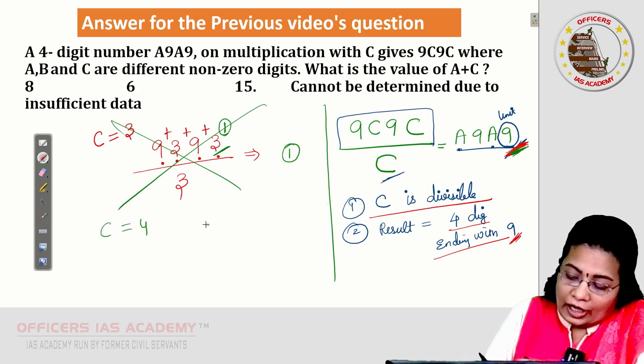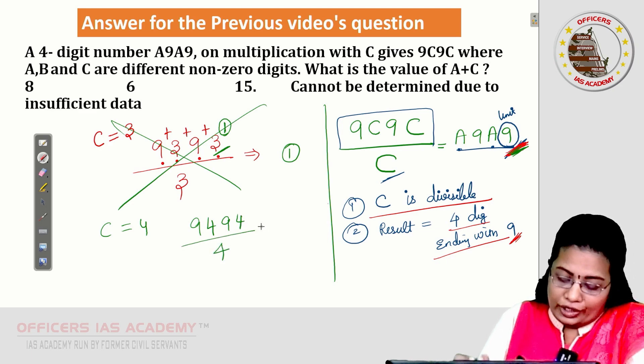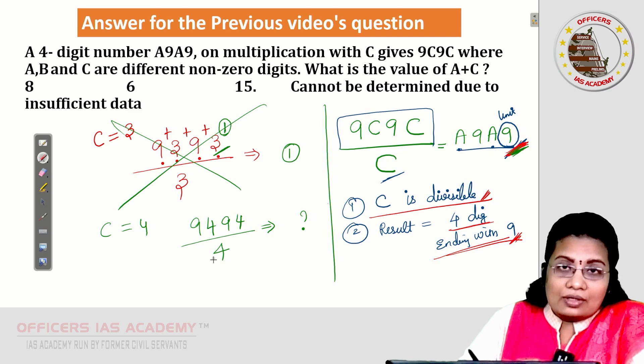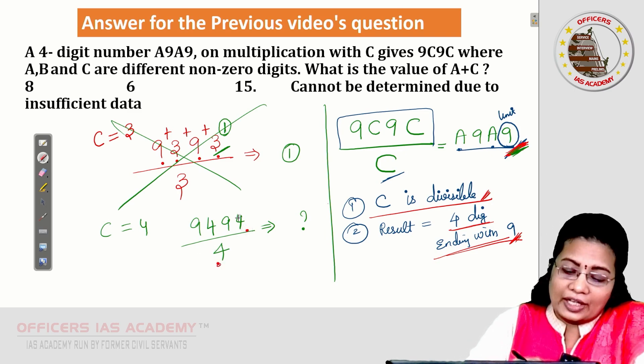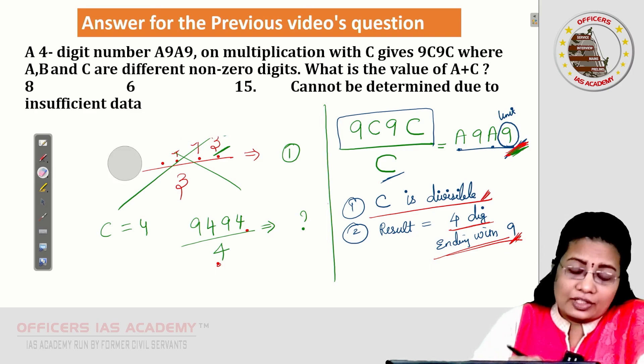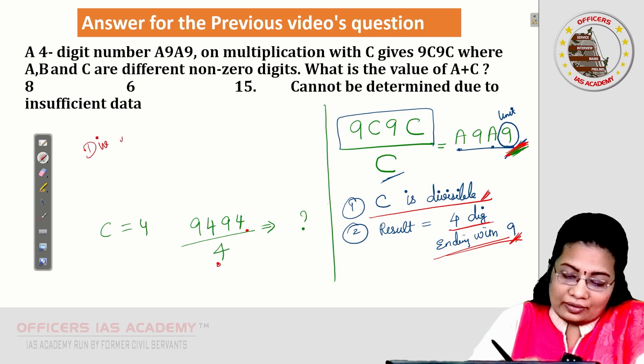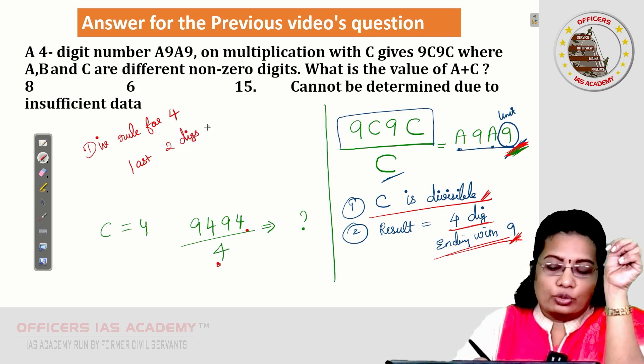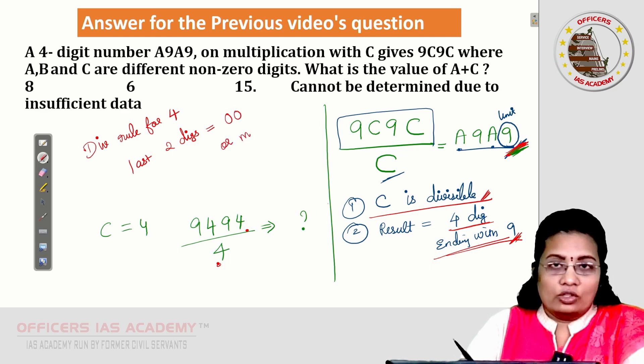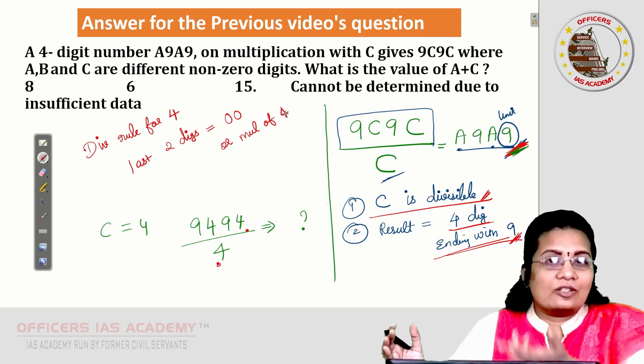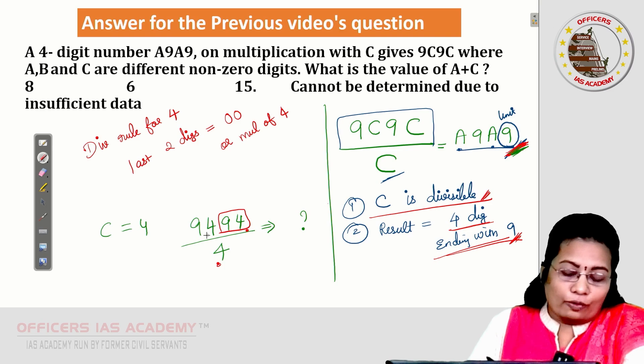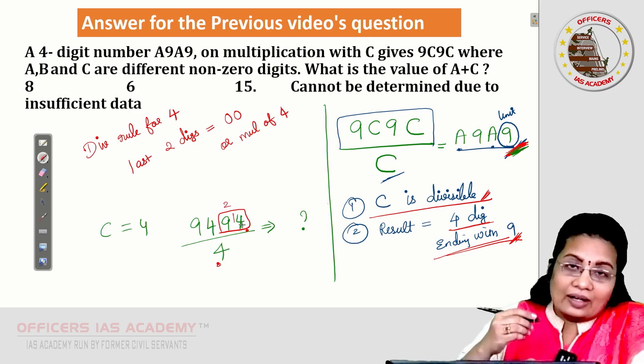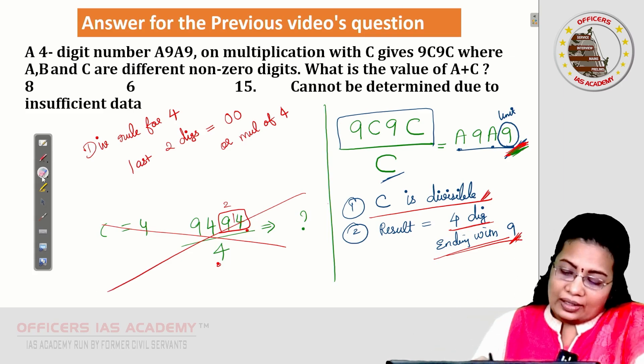Case 4, I am just checking. 9494 divided by 4. What is the result going to be? The result must be of 4 digits ending with 9. Okay. What is the first condition? This 4 must be divisible in the numerator. What is the divisibility rule for 4? Just think. Divisibility rule for 4 is, you want to check for last 2 digits. Last 2 digits must be 0 or multiple of 4. This is enough irrespective of the number of digits. This is the divisibility trick with 4. Last 2 digits are 94. 94, whether it is divisible by 4? No. 2 times 4 is 8. 14. 14 is not divisible by 4. So, we can eliminate at this stage. We can come out of the process now. So, 4 is not a valid number for C.